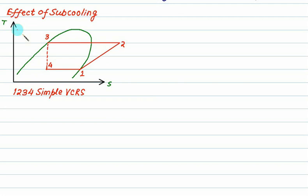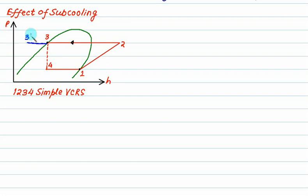To investigate the effect of sub-cooling, consider a pH diagram of a simple VCRS. State 1 is dry and saturated, and state 3 is saturated liquid. The cycle works anti-clockwise. If there is sub-cooling, this point will shift to the left-hand side, giving us state 3-dash and state 4-dash, forming the sub-cooling cycle: 1-2-3'-4'.